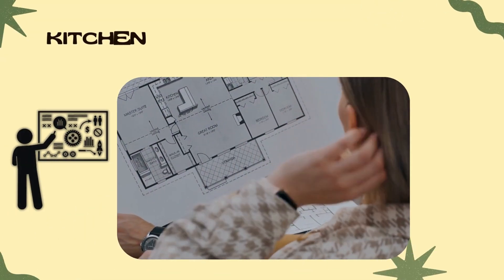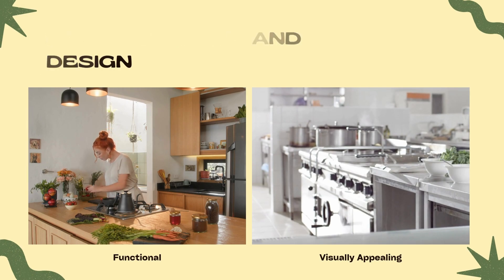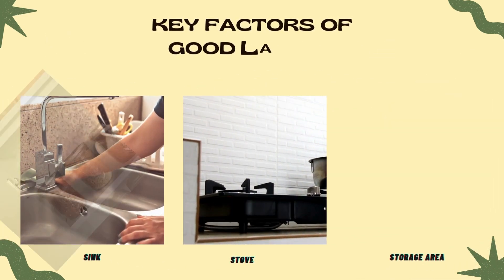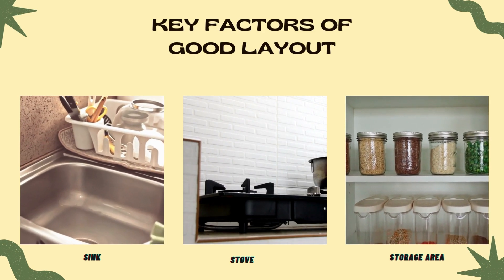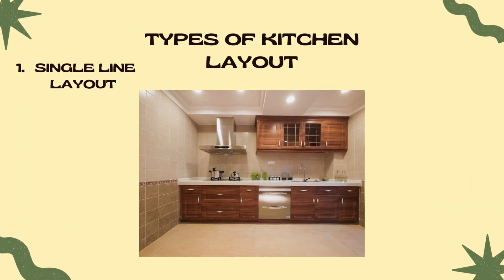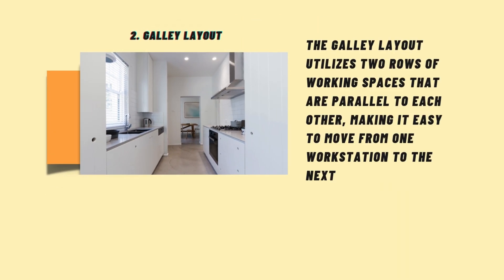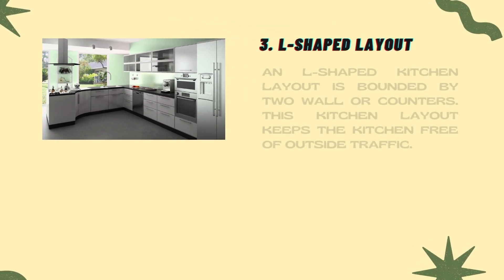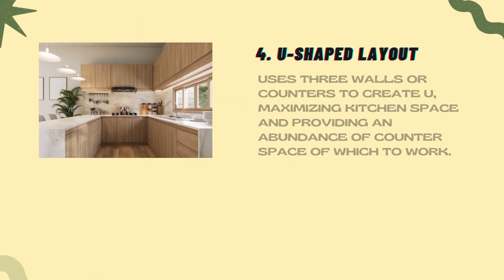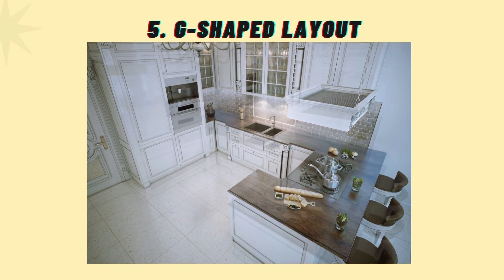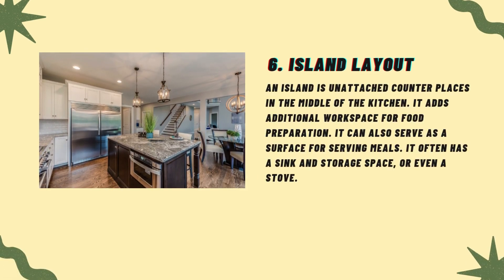Kitchen Layouts and Design: A well-planned kitchen is both functional and visually appealing. Key factors in a good layout include proper placement of the sink, stove, and storage areas, enough space for food preparation and free movement, and a layout that simplifies cooking tasks. Popular kitchen layouts include: single-line layout — all appliances and counters align along one wall; galley layout — two parallel rows for efficient workflow; L-shape layout — two connected walls or counters; U-shape layout — three walls or counters to maximize space; G-shape layout — adds extra workspace to the U-shape design; and island layout — a standalone counter in the center that provides additional workspace and serves as a focal point.